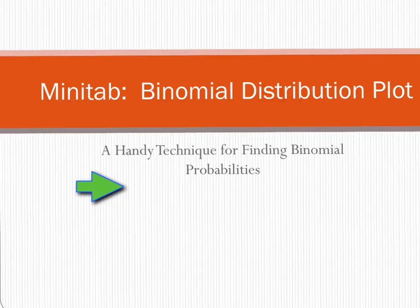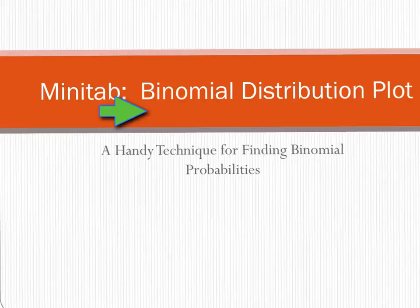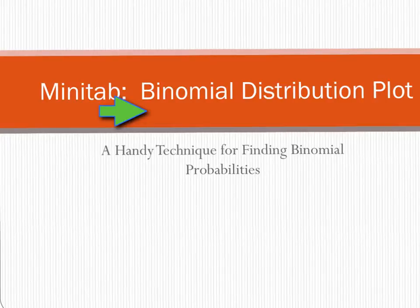One of the really great tools in Minitab that I sometimes overlook for calculating binomial probabilities is the binomial distribution plot. It's really great for getting a visual of your probabilities and it's a lot faster than using the calc function. It comes in really handy when you need to calculate your binomial probabilities, and it's especially useful when you need probabilities between two values. I'm going to show you how to use this tool and you can decide whether you like it better or the calc function.